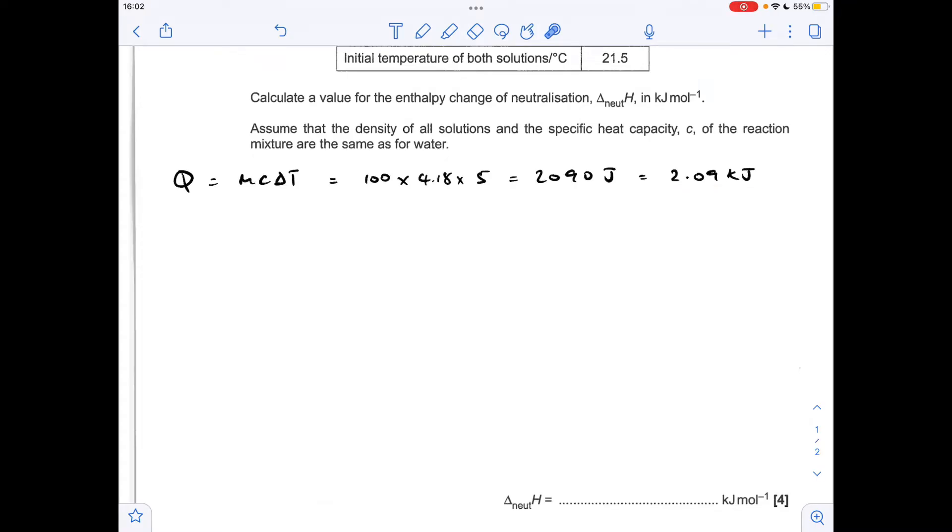I'm going to put that into kilojoules because our final answer needs to be in kilojoules per mole. There's the equation for the reaction that's taking place. We were told that the sodium hydroxide is in excess, so we're going to calculate the moles of acid involved in the reaction.